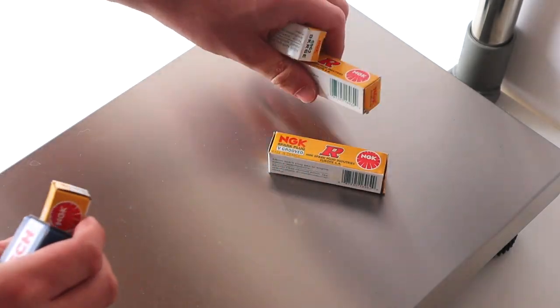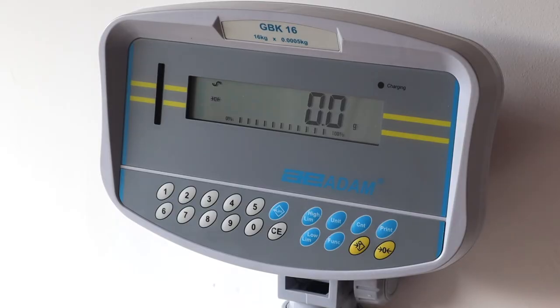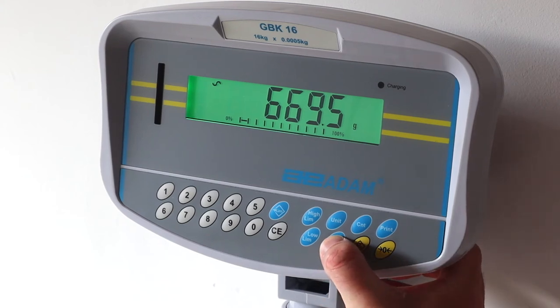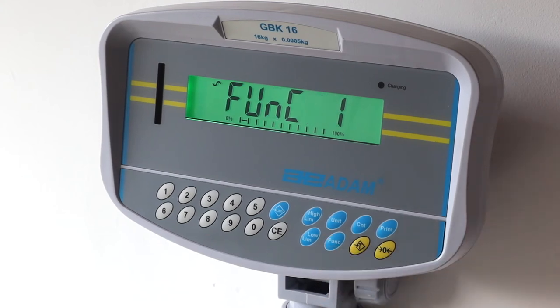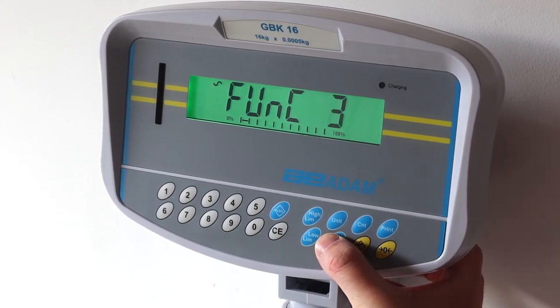Alternatively, you can ensure the items you're weighing are the correct weight with percentage weighing. Use an item as your target weight reference by placing it on the scale. Press the function button four times and then press tare twice.